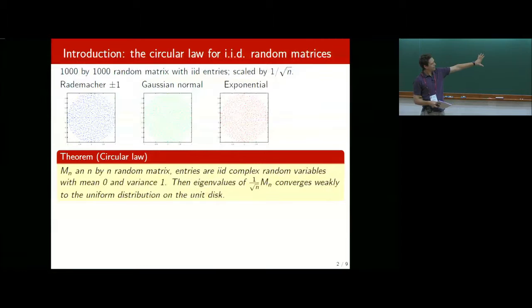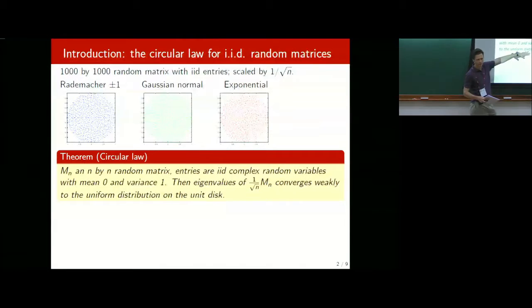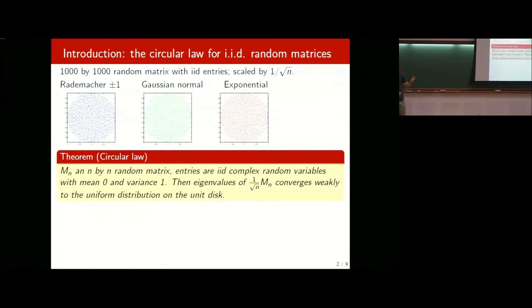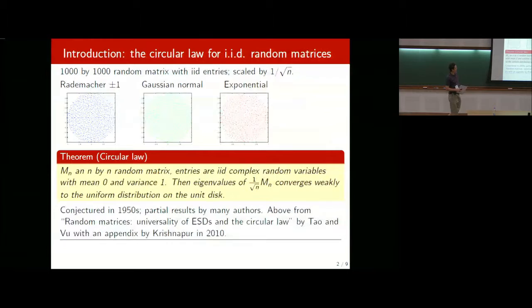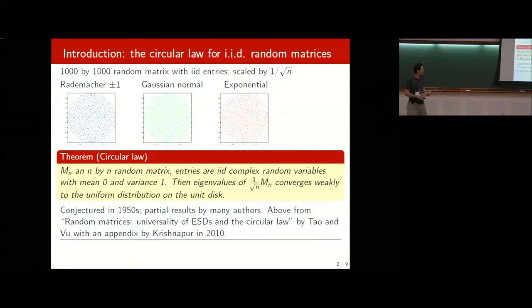The easiest case was complex Gaussian, done in the 60s by Mehta or formalized by Silverstein and Huang. The real Gaussian case was done by Edelman. Then Girko, Pan and Zhao, and Goetz and Tikhomirov improved each time, getting closer to just needing second moment bounded. The final result appeared in a paper by Tao and Vu with an appendix by Krishnapur. There are even extensions beyond this for the circular law.